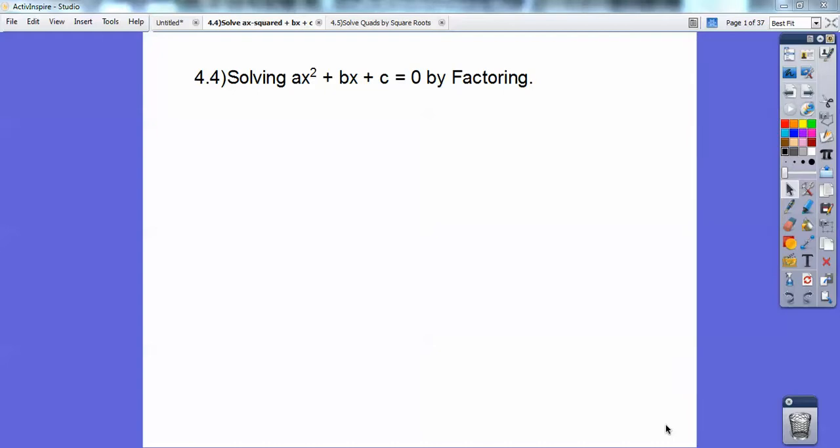Hey everybody, Mr. Bullock here again. This is solving ax² + bx + c by factoring. Okay, this is when there's a number other than one in front of the x squared right there.